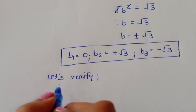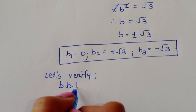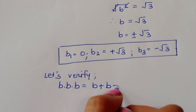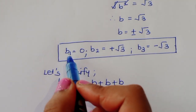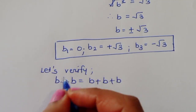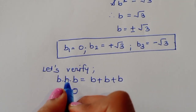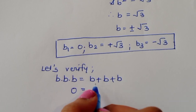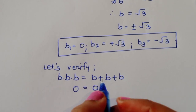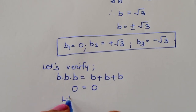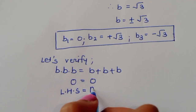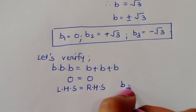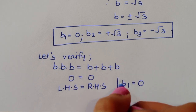The equation is b times b times b equals b plus b plus b. Taking b1 equal to 0: the left side becomes 0 times 0 times 0, which is 0, and the right side is 0 plus 0 plus 0, which is also 0. LHS equals RHS, so b1 equal to 0 is a correct solution.